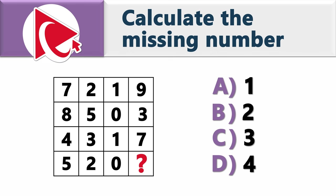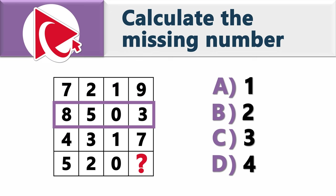The values that are there, starting with row 1, are 7, 2, 1, and 9. Row 2 has 8, 5, 0, and 3.